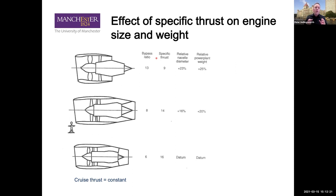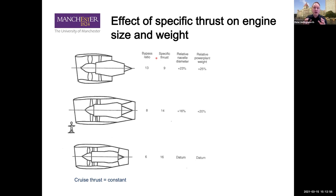If you don't balance OPR and turbine entry temperature correctly, you won't get the most efficient use of the work put into the air through the compressor. There's an optimal point based on pressure rise for temperature rise — you have to do both in concert. As you drive up both OPR and turbine entry temperature together, you can make a more efficient core, extract more power, drive a bigger fan, and create thrust with a higher bypass ratio.